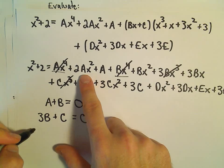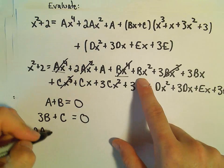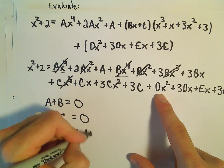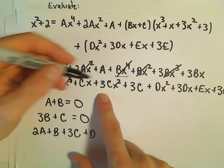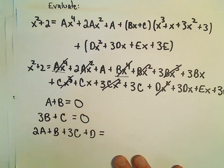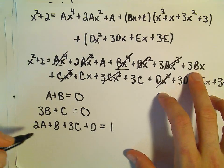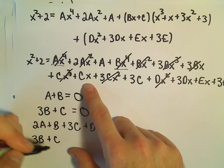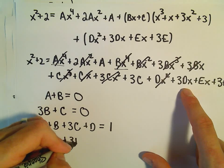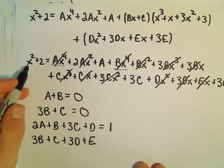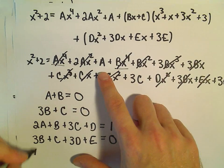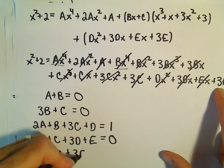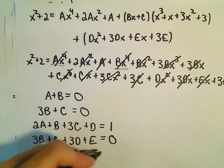For x squared terms: 2A plus B plus 3C plus D equals 1, since the coefficient of x squared on the left is positive 1. For x terms: 3B plus C plus 3D plus E equals zero, since there are zero x's on the left side.